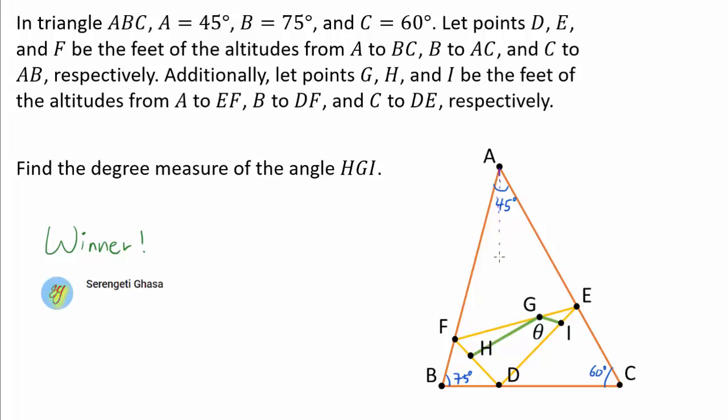So if we think about dropping down an altitude from A to side BC, we are going to hit point D. And similarly, if we drop an altitude from B to side AC, we are going to hit E, and finally we are going to hit F. And you may be noticing that as we are dropping down these altitudes, we are forming a lot of 30-60-90 and 45-45-90 triangles.